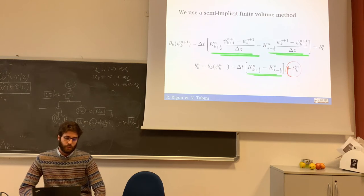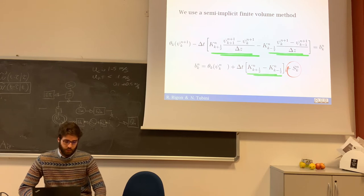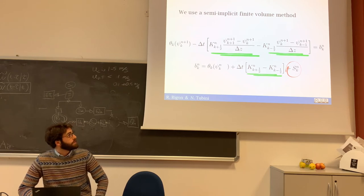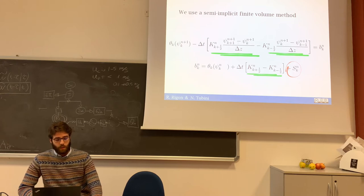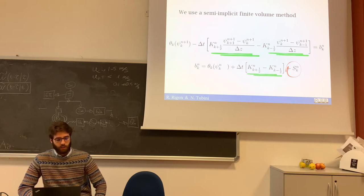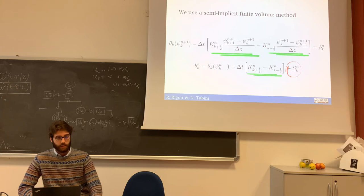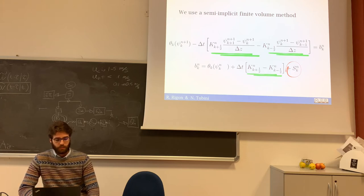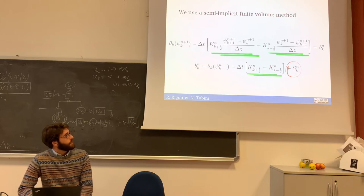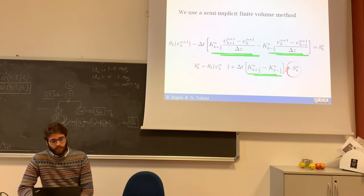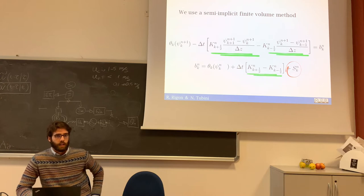If we use a semi-implicit finite volume method, the partial differential equation can be discretized in this way. We have the water content at time level n+1 and the water content at level n on the right-hand side. The discretized water fluxes are shown, and the source term S represents, for example, evapotranspiration.